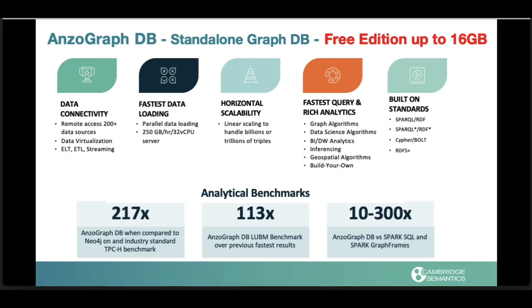I also want to call out some of the analytical benchmarks that we've published on our website. You can see here against Neo4j, a leading graph database, we were 217 times faster. Against Spark SQL and Spark graph frames anywhere from 10 to 300 times faster. Those are both using the TPC-H benchmark, an industry standard data warehousing benchmark.